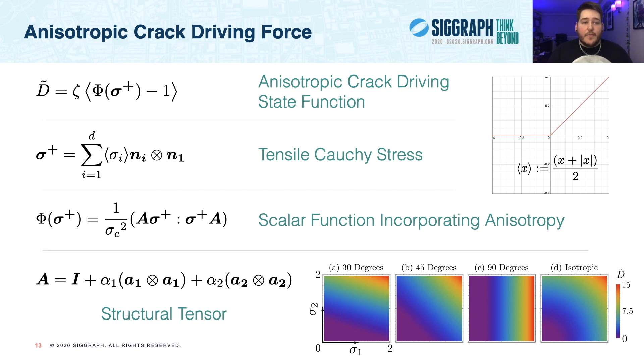For example, a material can be changed from orthotropic to transversely isotropic by simply setting alpha 2 to 0, and even further, made to be isotropic by also setting alpha 1 to 0. At right, we present four plots showing the behavior of our d tilde function for three different fiber orientations, as well as an isotropic material. And notice how for the 90-degree fibers, as stress increases in the fiber direction, sigma 2, d tilde stays constant, but it increases quite rapidly due to stress in the weak orthogonal direction. And conversely, for the isotropic material, it responds identically to stress in every direction.